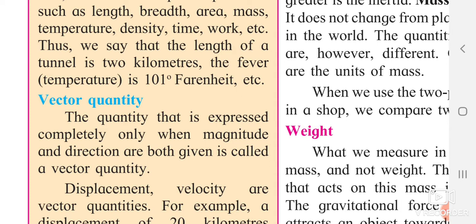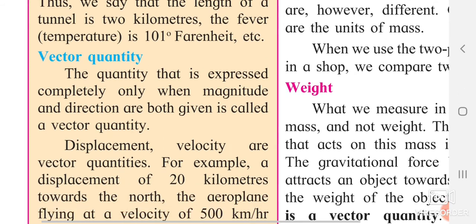Velocity means the change in displacement in a particular time. These are all vector quantities. For example, displacement of 20 km towards North — if it was only 20 km, it was a scalar quantity. But since we say 20 km towards North, the direction is specified, so it is a vector quantity.